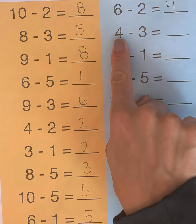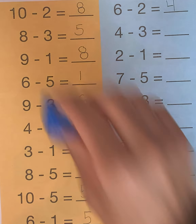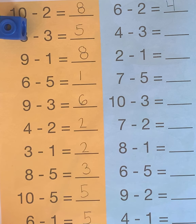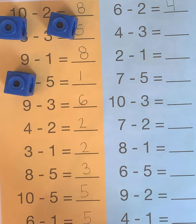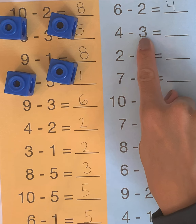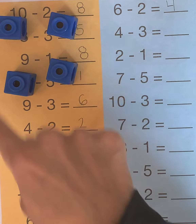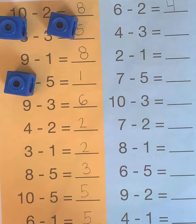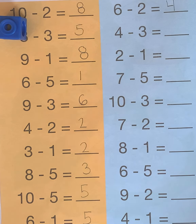Our next problem is 4 minus 3. So we want to start off with 4 cubes: 1, 2, 3, 4. And we are taking how many away? 3. So let's take 3 away: 1, 2, 3. How many cubes are left? Just 1.